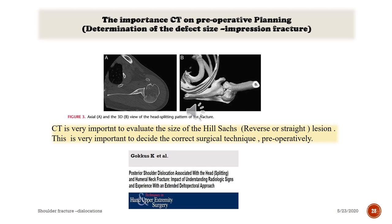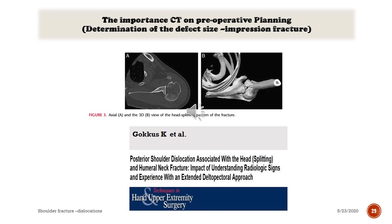The importance of CT on preoperative planning: CT scan is very important to evaluate the size of the Hill-Sachs lesion and decide the correct surgical technique preoperatively. CT shows the appearance of one posterior shoulder head-splitting fracture dislocation, and 3D view of the head-splitting pattern of the fracture.